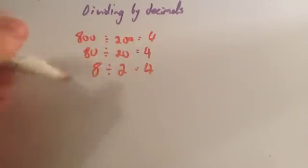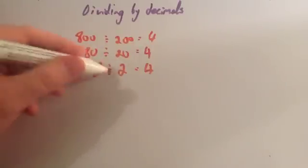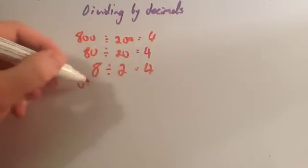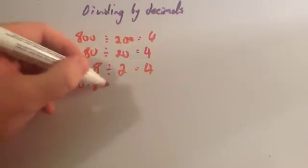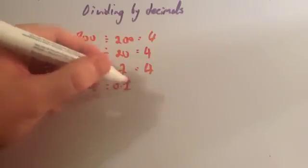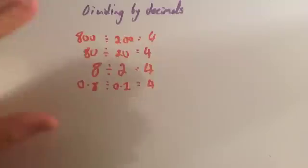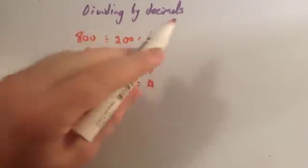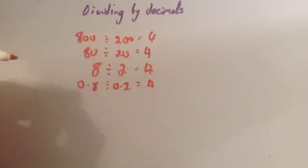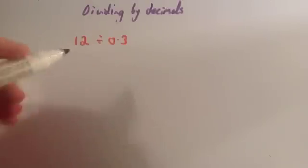So that would work for dividing as well. If I divided both of these by 10, I would get 0.8 divided by 0.2, and again the answer to that will be 4. Now that's going to come in handy whenever we're dividing by decimal numbers. We're going to look at 12 divided by 0.3.